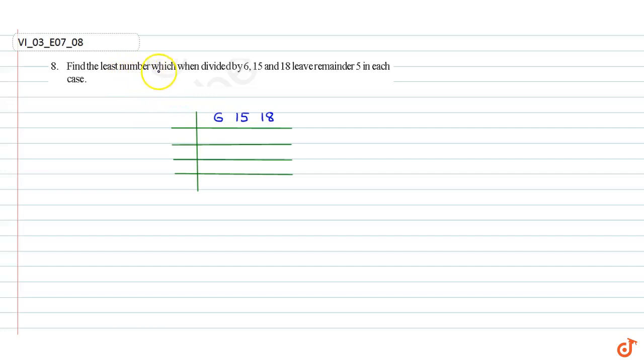In this question, we have to find the least number which when divided by 6, 15 and 18 leave remainder 5 in each case.